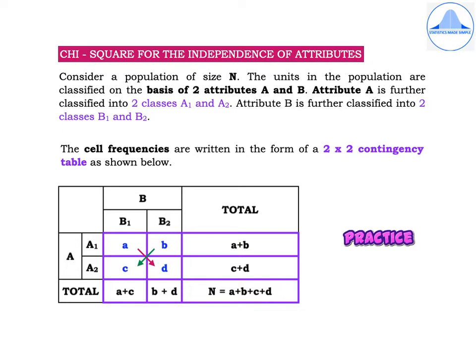The cell frequencies are written in the form of a 2x2 contingency table. In the table, to the extreme left you have attribute A divided into two classes A1 and A2, representing the rows. Attribute B is divided into two classes B1 and B2, representing the columns. The cell frequencies are denoted in blue colour by lowercase alphabets a, b, c, and d.